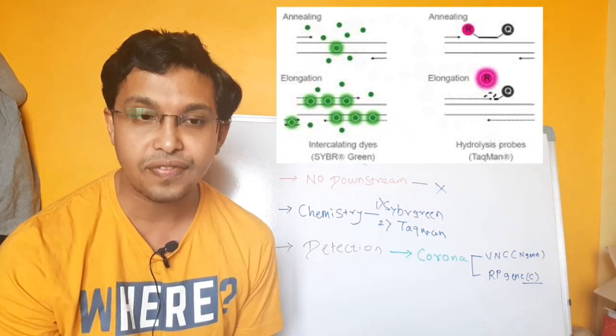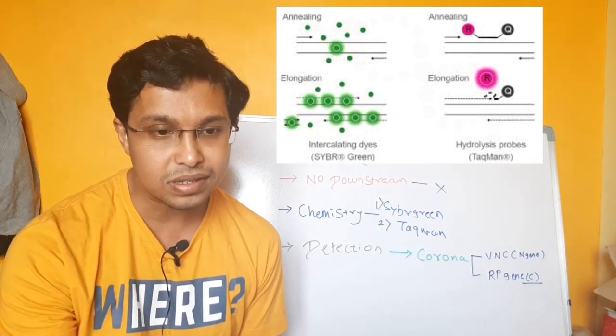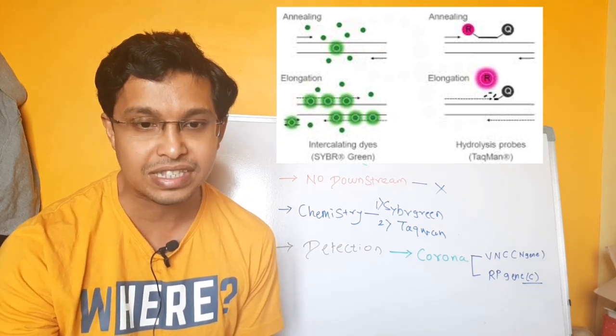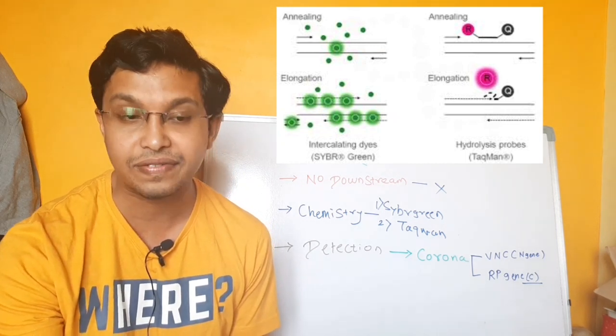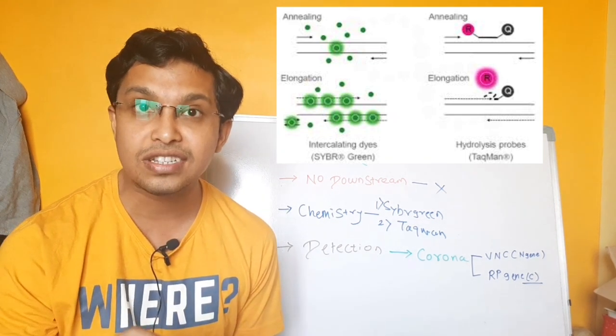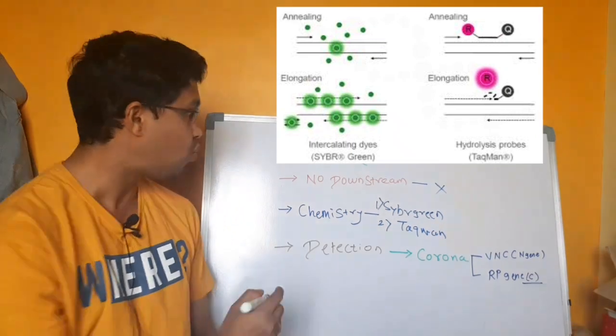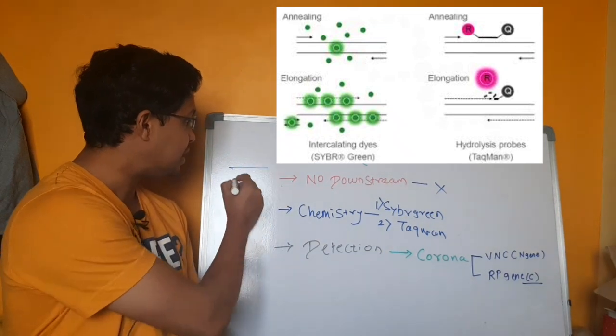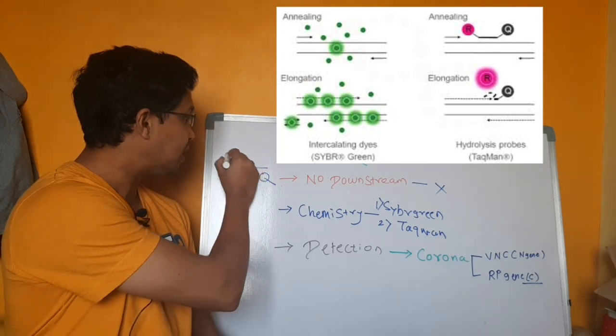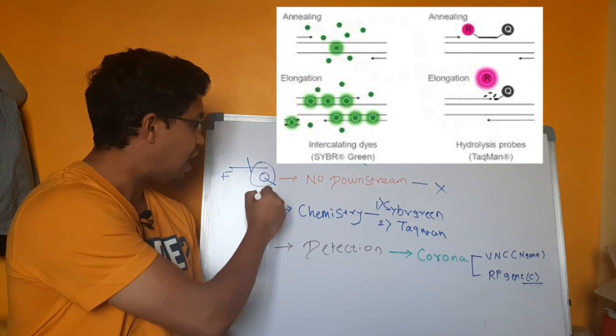In case of Taqman probe chemistry, what is the principle? Once your RNA gets amplified, the probe anneals to a specific target sequence located between forward and reverse primers. During the extension phase of a PCR cycle, the five prime nuclease activity of your Taq polymerase degrades the probe. As you can see, if there is a fluorescence and a quencher, during amplification the Taq polymerase degrades this and the quencher will go away.